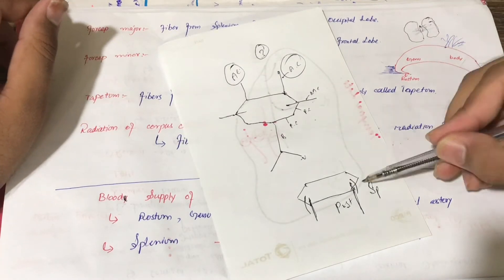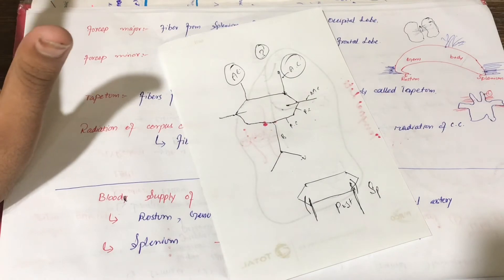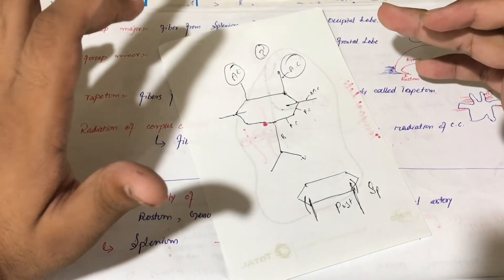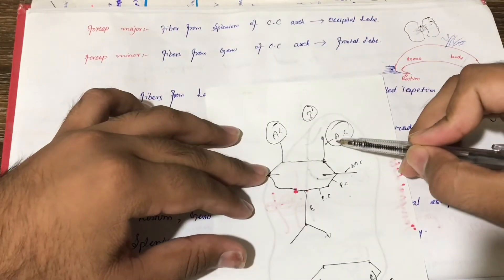So basically this is why the splenium has one artery supplied by the three arteries.